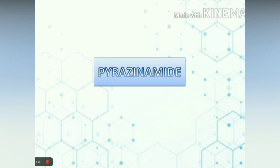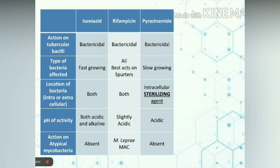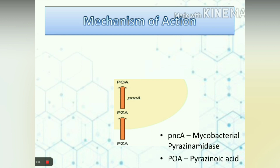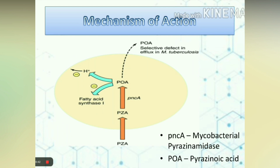The next drug is pyrazinamide. Pyrazinamide is bactericidal in action, but its activity is less than that of isoniazid. It kills slow-growing and residual intracellular bacteria, and therefore is also known as a sterilizing agent. It is best active at acidic pH, and action on atypical mycobacteria is absent. Mechanism of action: pyrazinamide enters the bacteria and is converted by mycobacterial pyrazinamidase into its active form, pyrazinoic acid. Pyrazinoic acid has two functions: it inhibits mycolic acid synthesis, and it disrupts the mycobacterial cell membrane and transport function.